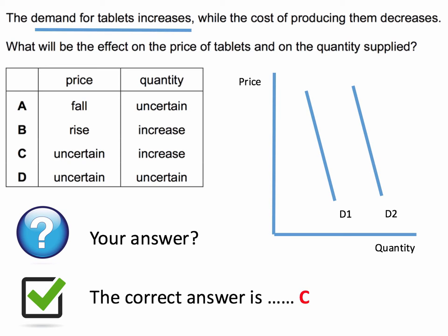We're told for example that the demand for tablets increases. There's been an outward shift in the market demand for tablets, but we're also told that the cost of producing them has decreased, perhaps because of economies of scale or significant advance in production technology or labor productivity, and of course that factor causes an outward shift of supply.